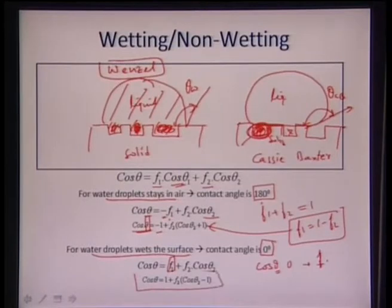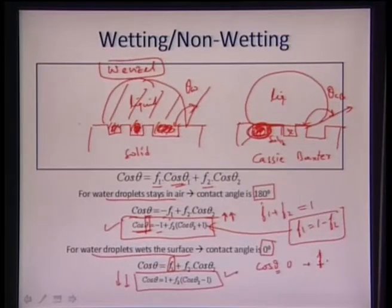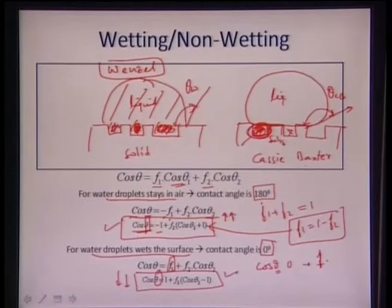When the water droplet is fully wetting the surface, the contact angle is 0 degrees, so cos(θ) = 1. This gives us a certain equation for the wetting state. Obviously, the contact angle will be much larger in the Cassie-Baxter state compared to the wetting state, because lower theta means the surface is getting wet to a larger extent. When theta = 0°, the liquid film wets completely; when theta = 180°, it does not wet at all.